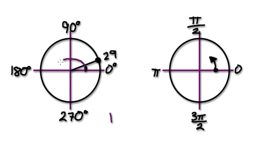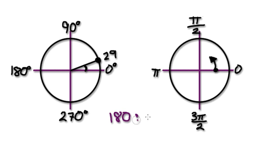From here to here, it's 180 degrees. And from here to here, it is pi. So on the right-hand side, you will have pi. Basically, 180 degrees is pi radians.